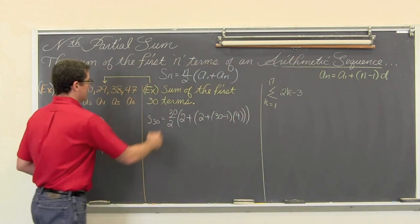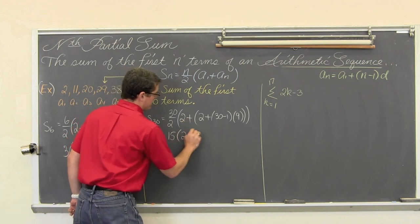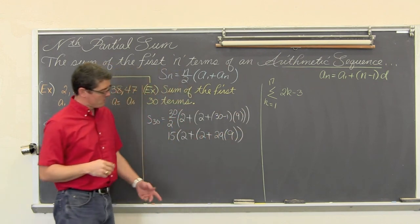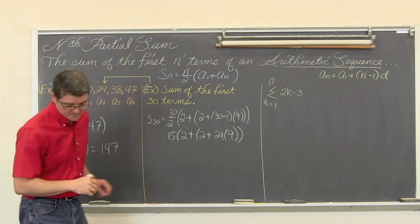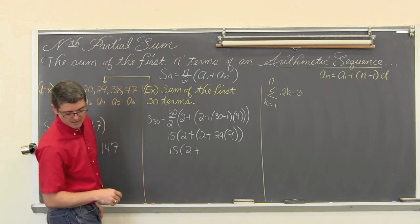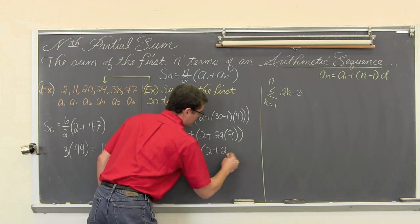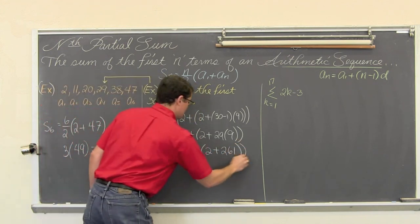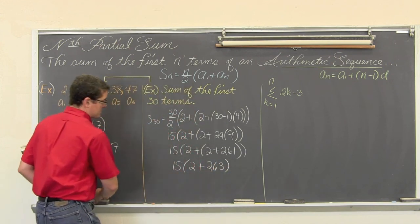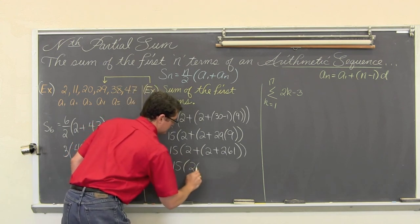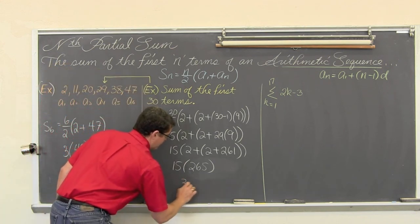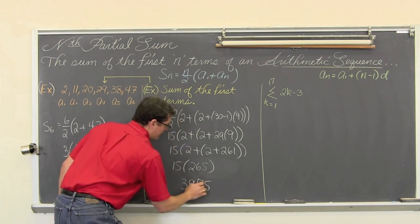Simplifying this out, we have 30 divided by 2 is 15. 2 plus 30 minus 1 is 29 times 9. And 29 times 9 is 261. So we have 15 times 2 plus 261, or 2 plus 261. That is going to give us 15 times 263, which is 265. And then 15 times 265 is 3975.